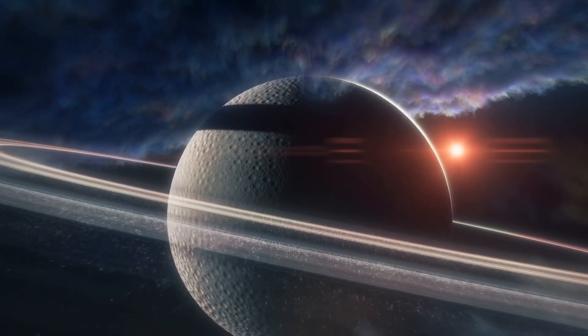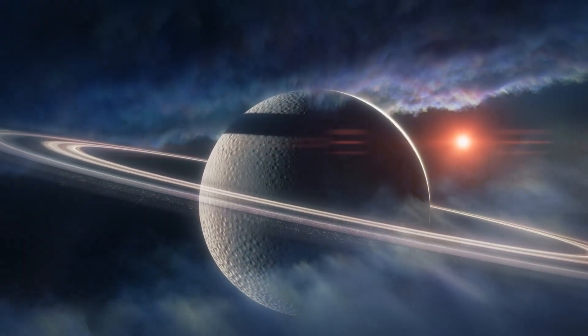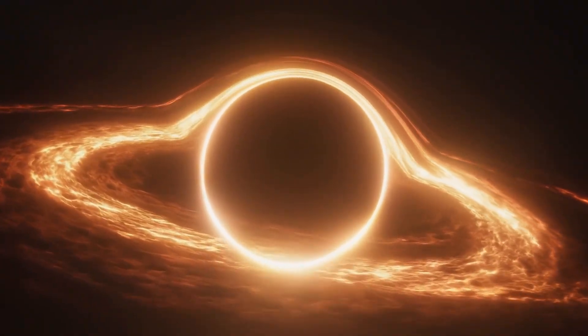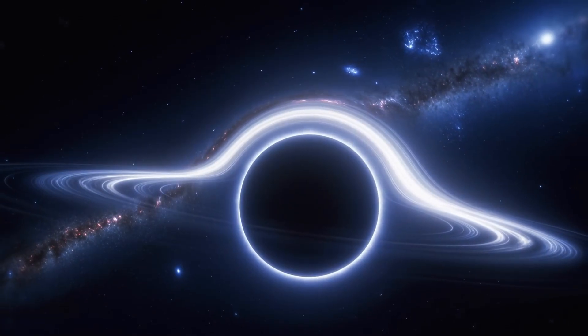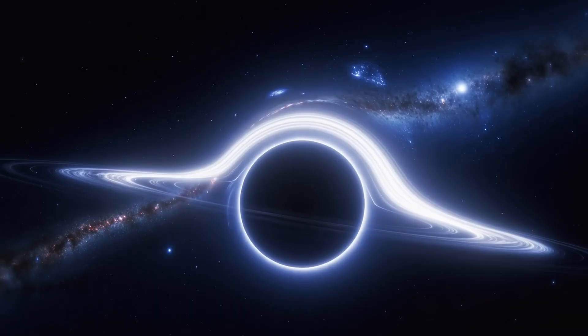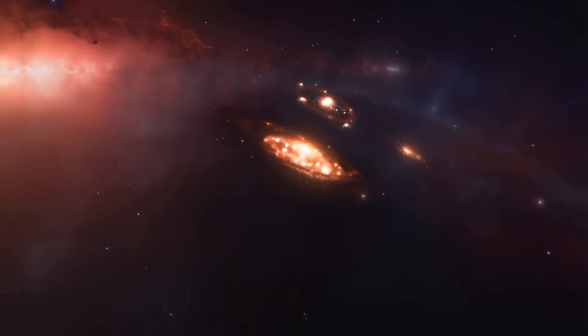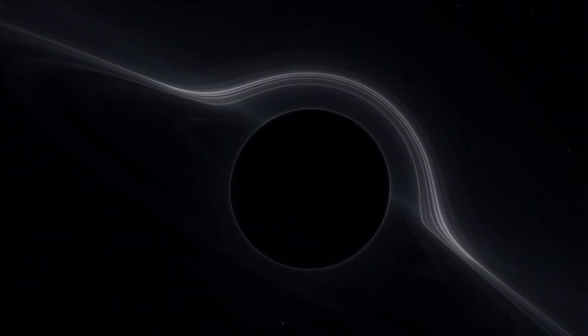We begin with a single world, our world Earth, a tiny blue sphere wrapped in clouds orbiting an average star in a quiet corner of the Milky Way. To us it feels vast. Oceans stretch for thousands of miles, mountains rise into the sky, continents hold billions of lives, and yet in the cosmic scale it's smaller than a grain of dust.